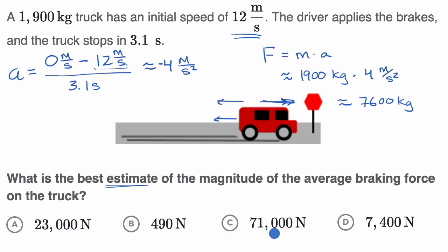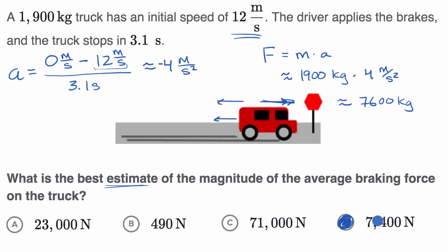Looking at the choices, I don't see 7,600, but the closest one is 7,400. I feel good about that because the real value here might be closer to negative 3.9 meters per second squared. If this were 3.9, then 3.9 times 1,900 gets us a lot closer to 7,400. All the other choices are way off from our estimate, so I like this choice.